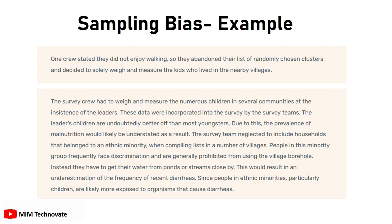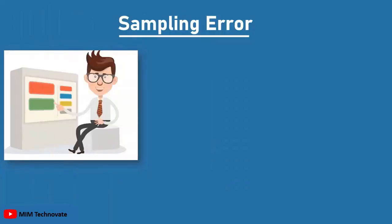The survey team also neglected to include households belonging to an ethnic minority when compiling lists in a number of villages. People in this minority group frequently face discrimination and are generally prohibited from using the village borehole; instead, they have to get their water from ponds or streams close by. This would result in an underestimation of the frequency of recent diarrhea, since people in ethnic minorities, particularly children, are likely more exposed to organisms that cause diarrhea.